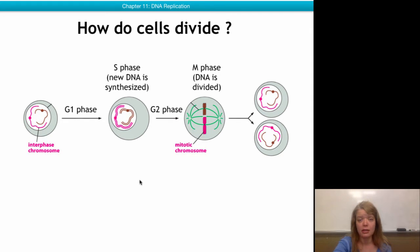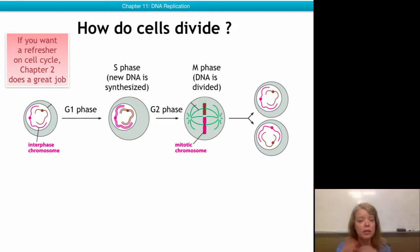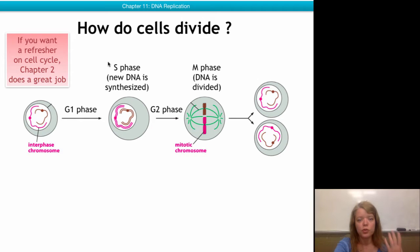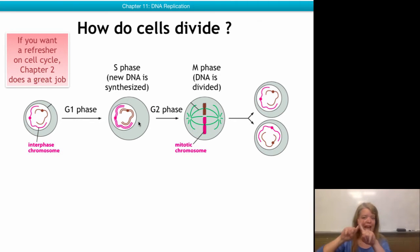I encouraged you earlier to look at the cell cycle review in chapter 2 of the book. As you can see here, the interphase chromosomes of a normal quiescent cell that's just doing its job but not planning on dividing just hang out in the nucleus. When the cell makes a decision that it's time to divide, it enters G1 phase, when it prepares itself for DNA replication. During the S phase — the DNA synthesis phase — the cell will replicate all of its DNA content, and now instead of a single chromatid, you will have two sister chromatids attached to each other.